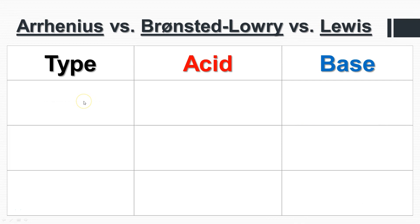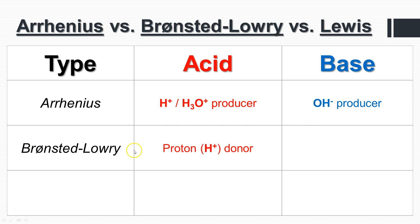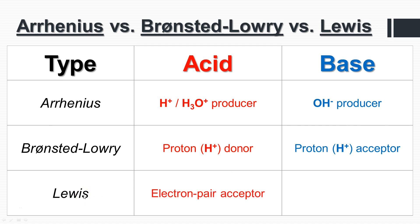Let's compare these theories. An Arrhenius acid produces protons or hydronium; an Arrhenius base produces hydroxides. A Brønsted-Lowry acid donates protons; a Brønsted-Lowry base accepts protons. A Lewis acid accepts an electron pair from another compound; a Lewis base donates an electron pair to another compound.